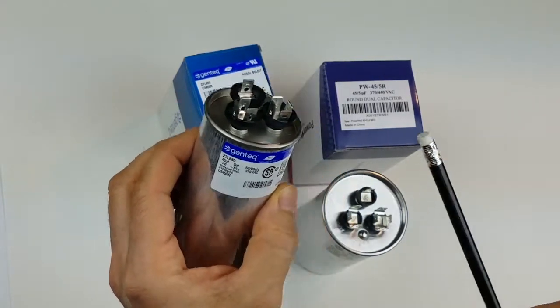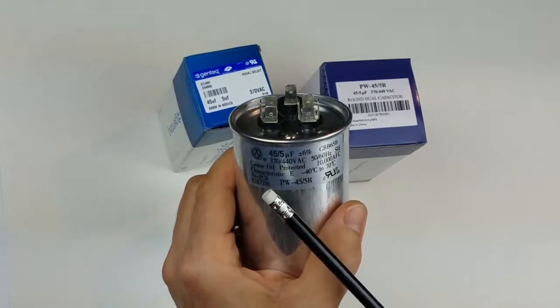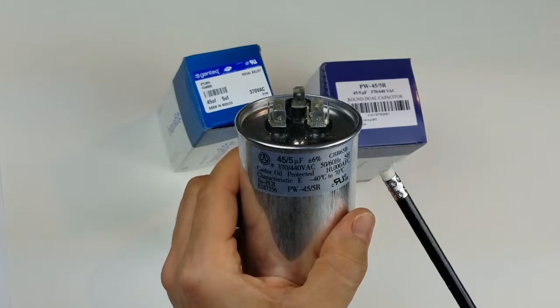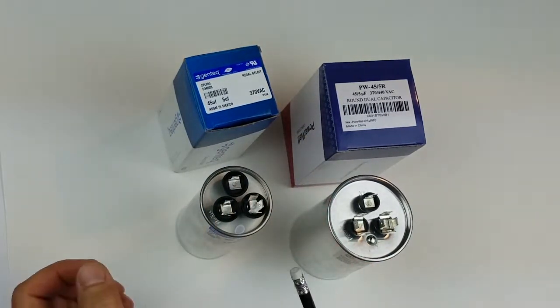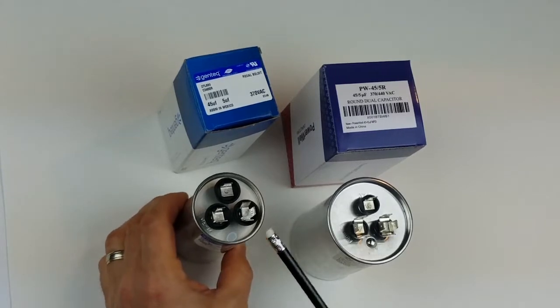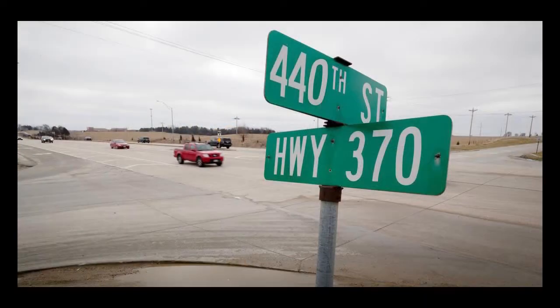Now the million dollar question: can the 440 capacitor be used instead of 370? Yes it is. It's like a Ferrari that can do 440 miles per hour driving on a road that has a speed limit of 370.